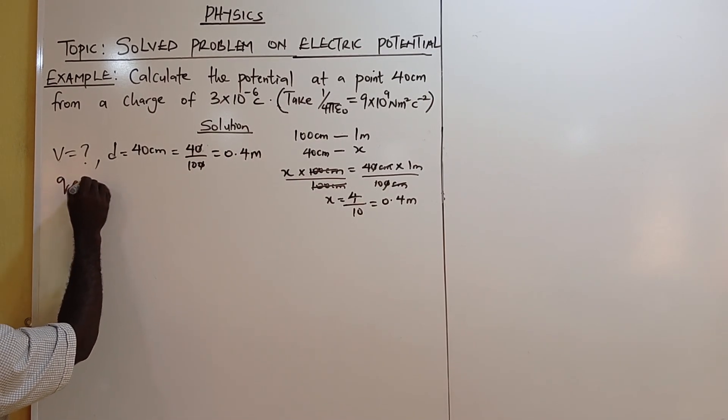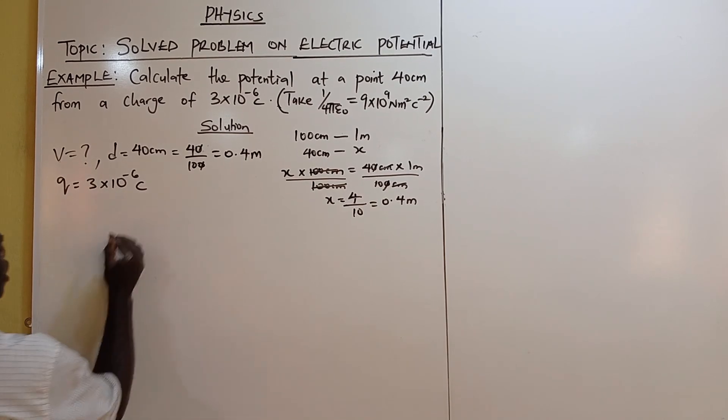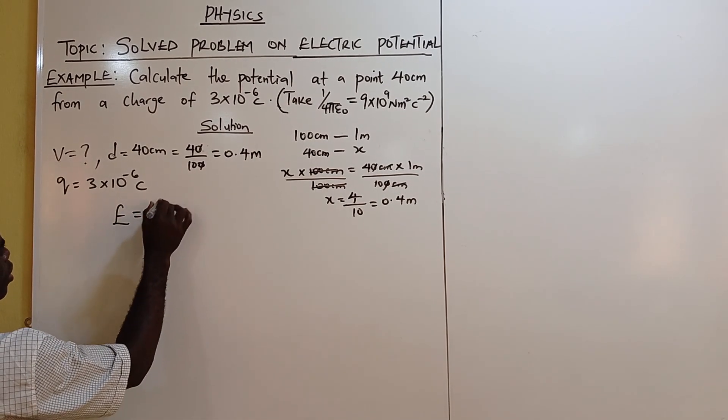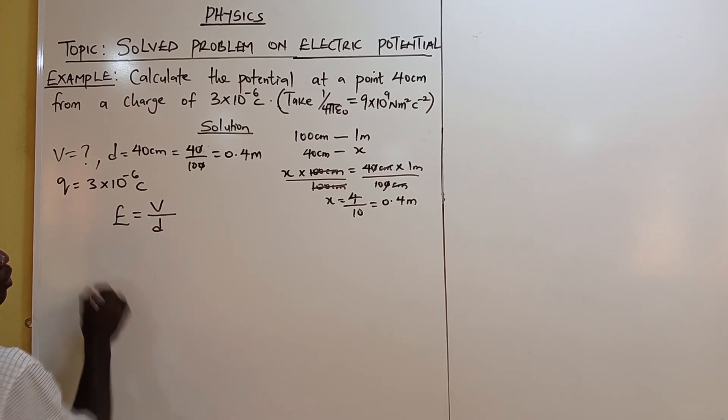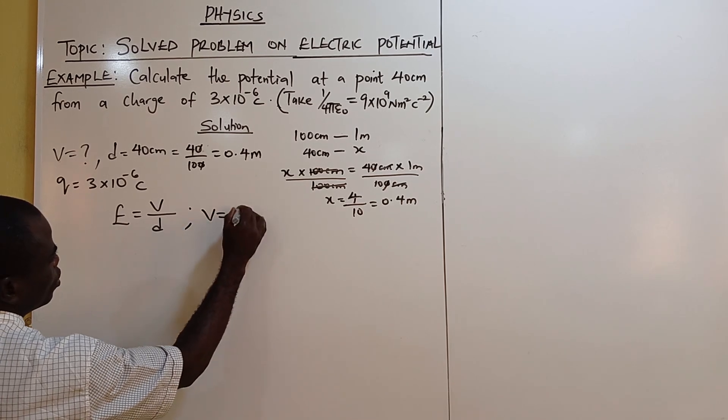The charge Q equals 3 times 10 raised to power minus 6 coulombs. Now don't forget that we have electric field strength to be potential, electric potential over distance. When you cross multiply, you have V equals to ED.